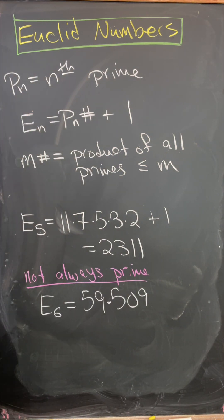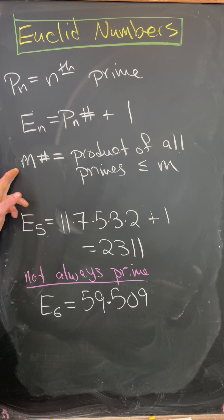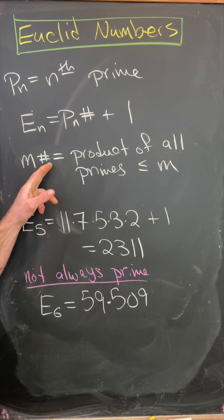First, we need to set Pn equal to the nth prime, and then E sub n is equal to the primordial of Pn plus 1. This m# is the product of all primes less than or equal to m.